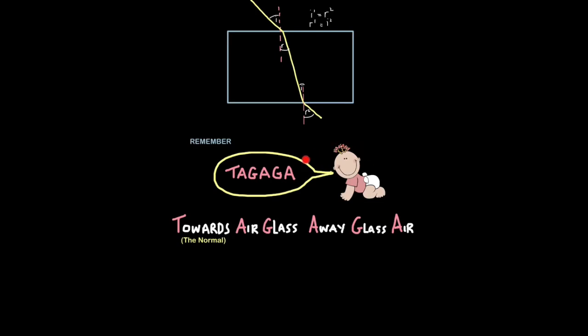But if that's still too scary for you, just remember this, TAGAGA, this kind of babyish sounding acronym. What this means is TAG is towards air to glass. So as light travels from air to glass, it bends towards the normal. And then AGA is away glass air. What that means is as light moves from glass to air, it bends away from normal. So towards normal is air to glass and away from the normal is glass to air, TAGAGA.